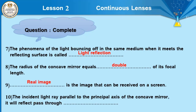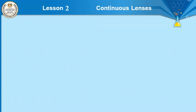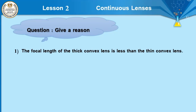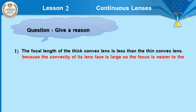Question number 10: the incident light ray parallel to the principal axis of a concave mirror will reflect passing through the focus. Give a reason: the focal length of a thick convex lens is less than that of a thin convex lens because the convexity of its lens surface is larger, so the focus is nearer to the optical center and the focal length becomes shorter.